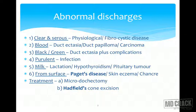However, milk can also be discharged in other scenarios, such as endocrine abnormalities like hypothyroidism and sometimes pituitary tumors. Blood discharge — sanguinous discharge — is typically seen in duct ectasia, duct papillomas, and malignancy, that is carcinoma of breast. Black or green discharge can be seen in duct ectasia and its various complications. Purulent discharge is evident with abscess formation or infection in the breast unit.